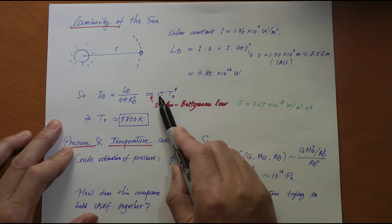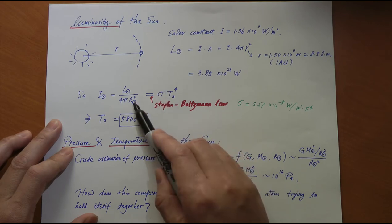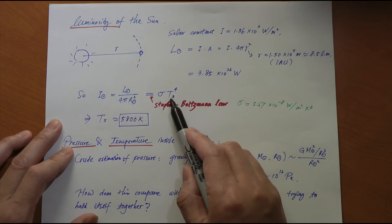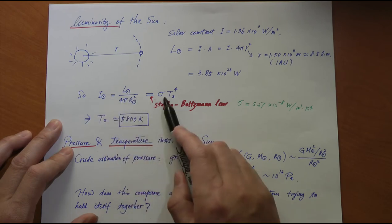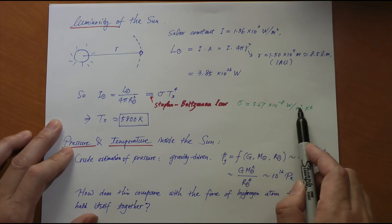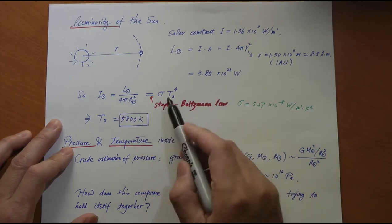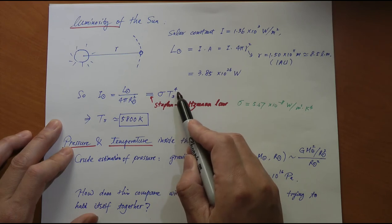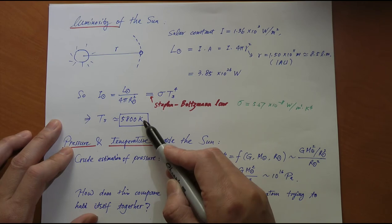Which is the Stefan-Boltzmann constant σ times the surface area of the sun, 4πR_sun^2, times the surface temperature to the power of 4. We can calculate the luminosity of the sun. We know what σ is. If we did that, we can go back and calculate the surface temperature of the sun. And it turns out we do get 5,800 Kelvin.